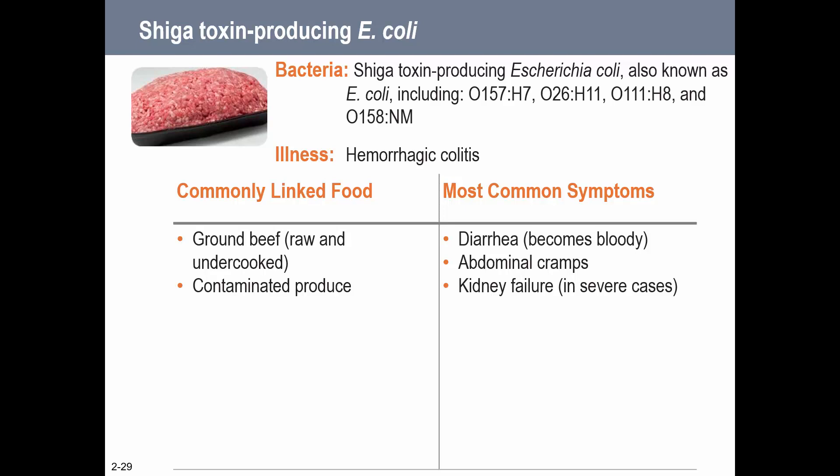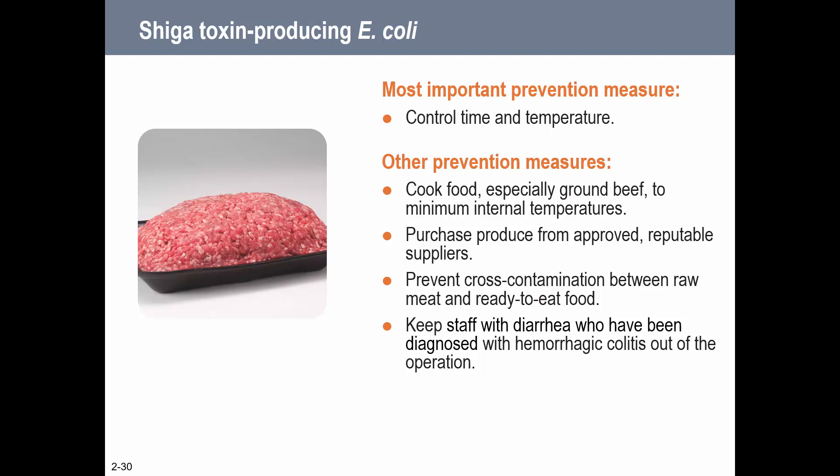E. coli - specifically the Shiga toxin-producing type - and the most common strain you may have heard of is O157:H7, which had a notable outbreak in ground beef. This can be a very serious disease and can cause kidney failure. Ground beef and contaminated produce are the biggest sources of E. coli. Controlling time and temperature is most important, but also cooking ground beef to minimum temperatures and preventing cross-contamination are all important.